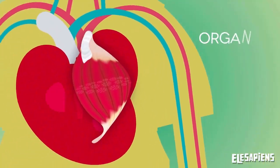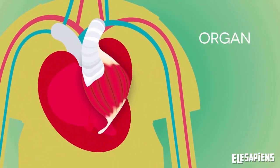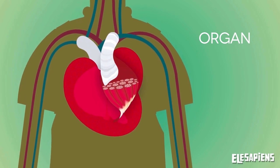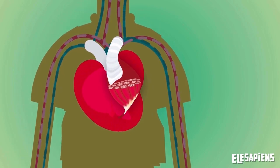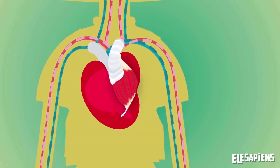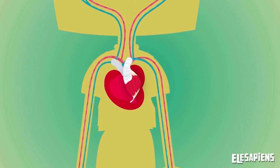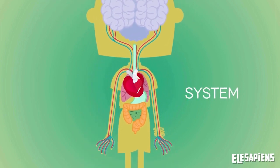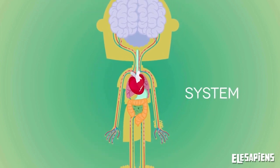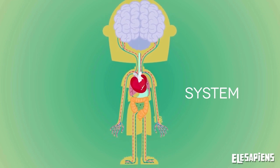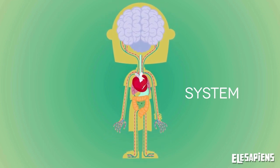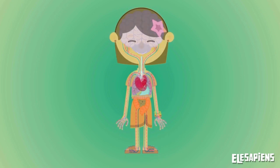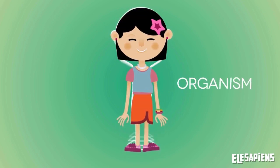The union of tissues forms organs, which also have a specific function. The heart uses muscle tissue to contract and pump blood. Organs are grouped to form systems with a common mission — the circulatory system is responsible for distributing nutrients throughout the body thanks to the heart. The union and coordination of different systems creates an organism.